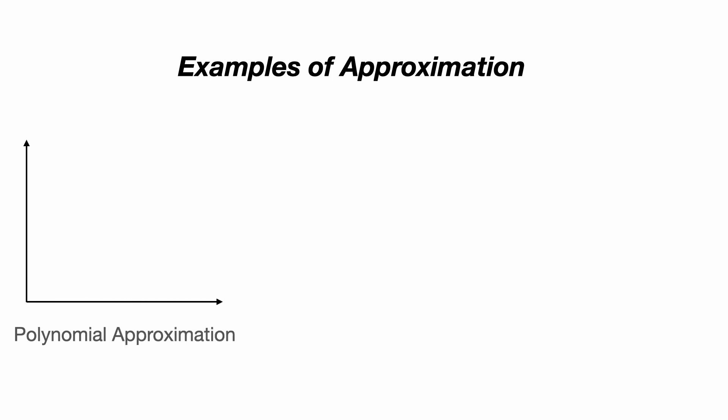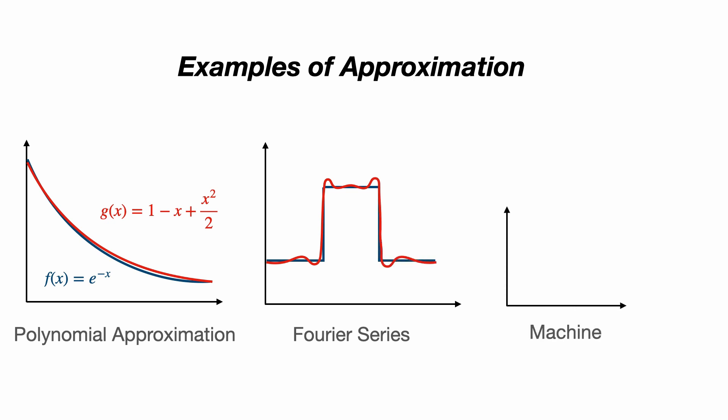There are many situations in applied mathematics where we use approximations. We approximate complicated functions with simpler polynomials. A common example of this is when we compute Taylor series. We can use periodic functions to approximate more complicated functions, even those which aren't continuous, using Fourier series. And we can approximate models to make sense of data using machine learning.